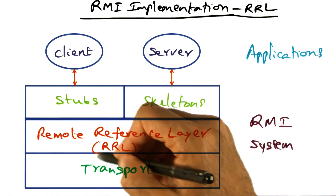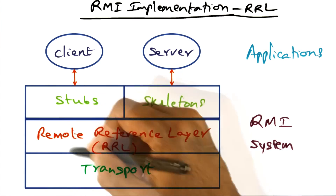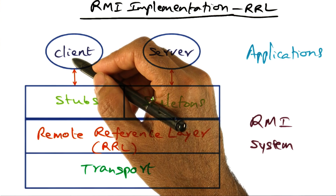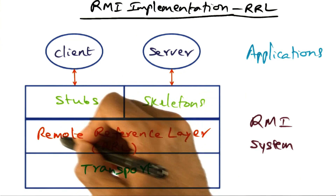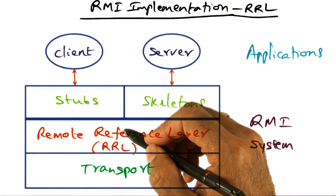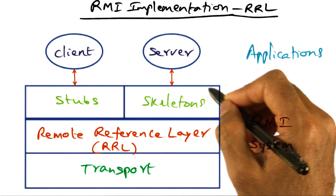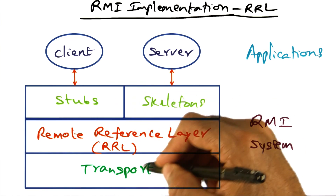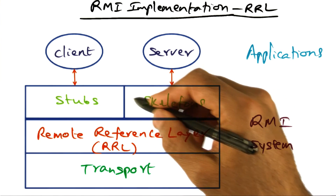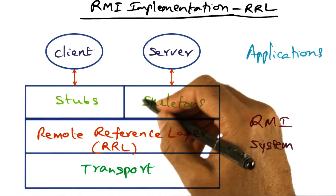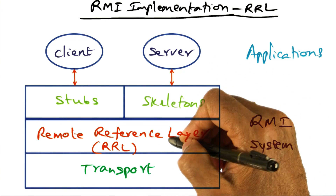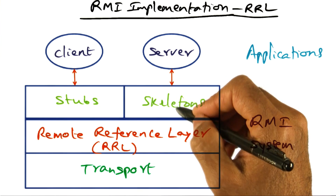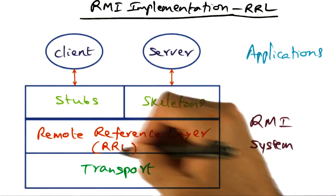Similarly, when the result comes back, unmarshalling the results into the data structures that the client understands is accomplished using this RRL layer. On the server side, the skeleton exists for unmarshalling the arguments that come from the client. In order to unmarshall the arguments, the skeleton uses the remote reference layer, because the RRL knows how to unmarshall the incoming arguments.